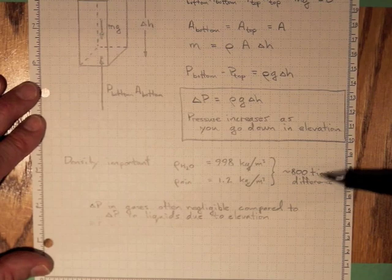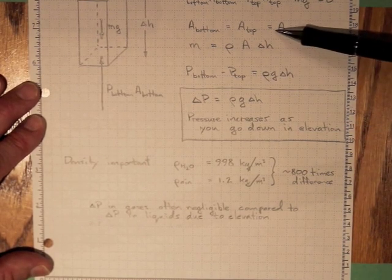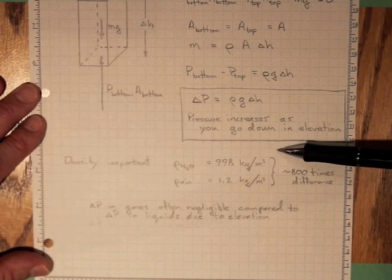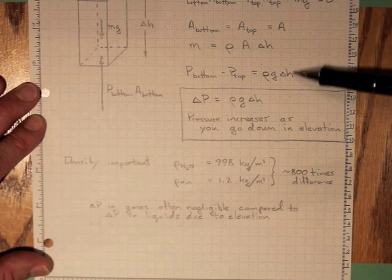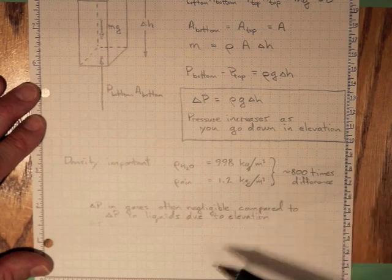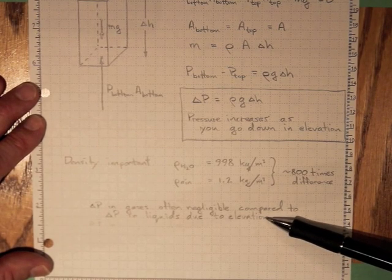So there's about an 800 times difference. So there'll be 800 times more increase in pressure if you go down a meter in water than there will be increase in pressure if you go down a meter in air. The result is delta P is usually quite large in liquids due to elevation.